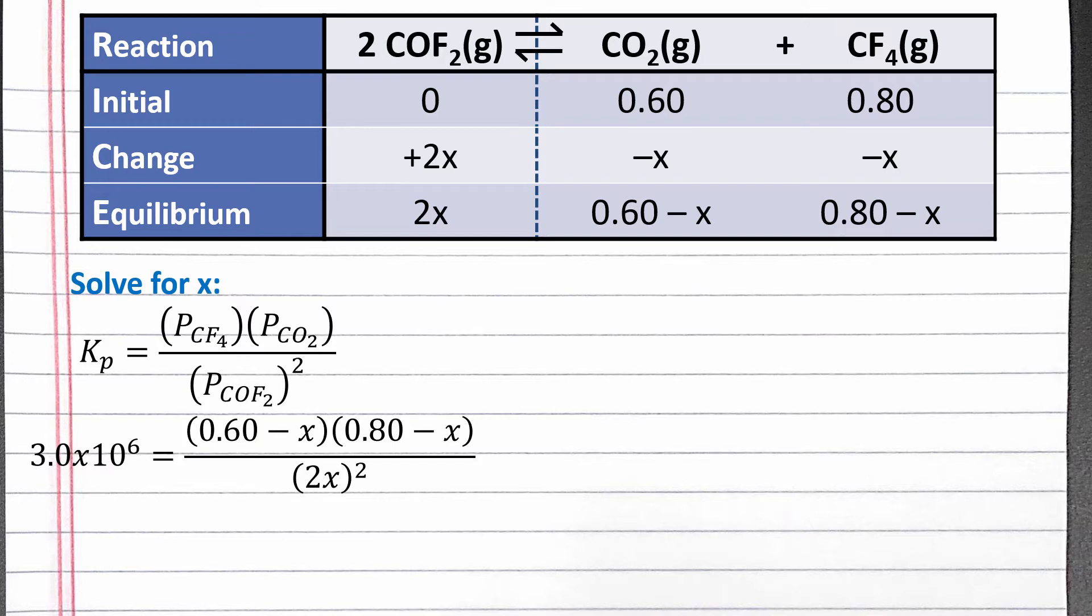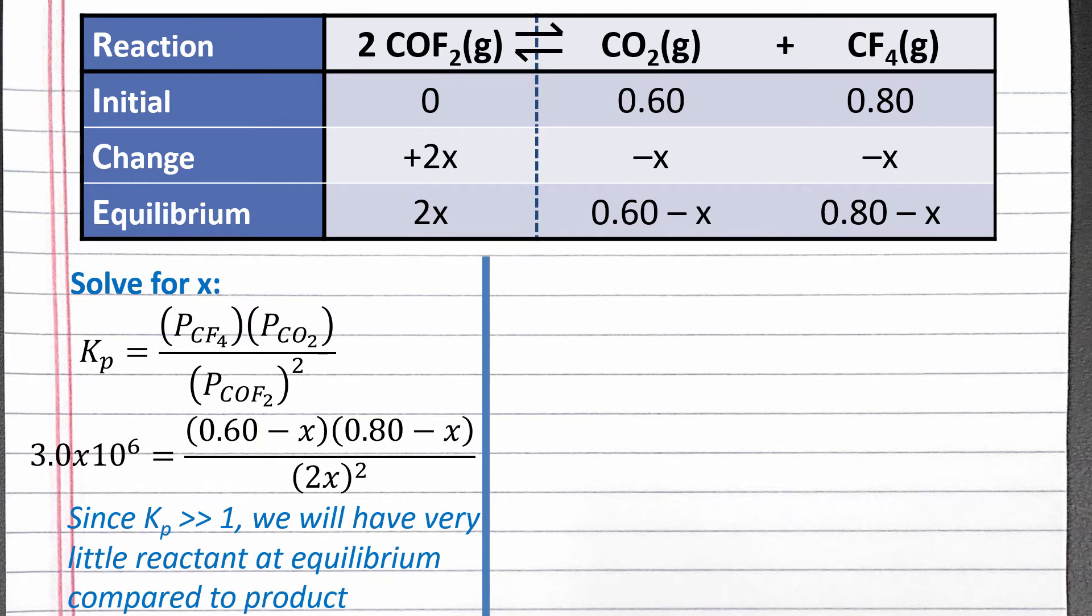Although we could use the quadratic formula to solve for x, we can notice that our value of Kp is very, very large. This means we will have very little reactant at equilibrium compared to product. 2x represents the amount of reactant we will have at equilibrium. Since this value must be very small, x is very small. If x is very small, then 0.60 minus x should be about equal to 0.60, and 0.80 minus x should be about equal to 0.80. These are our two simplifying assumptions.